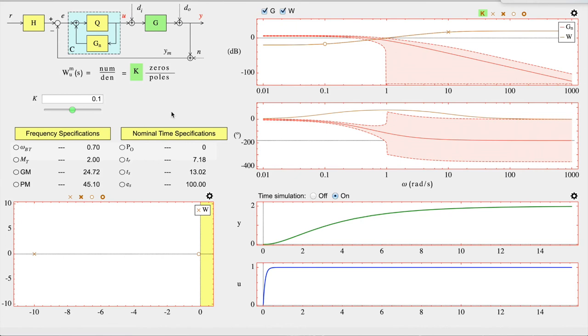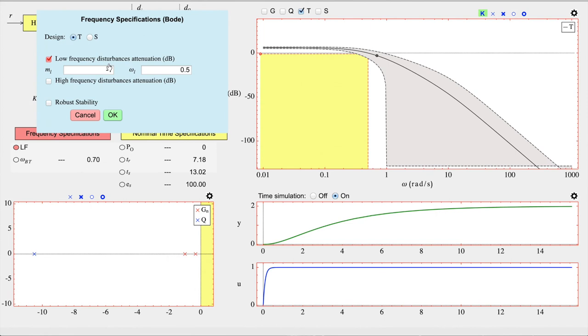With that, the region of the Bode plot covered by the plant with uncertainty can be observed. Selecting the frequency specifications, desired specifications are defined. Based on these specifications, a set of forbidden regions, shown in yellow, are visualized over the Bode plot.